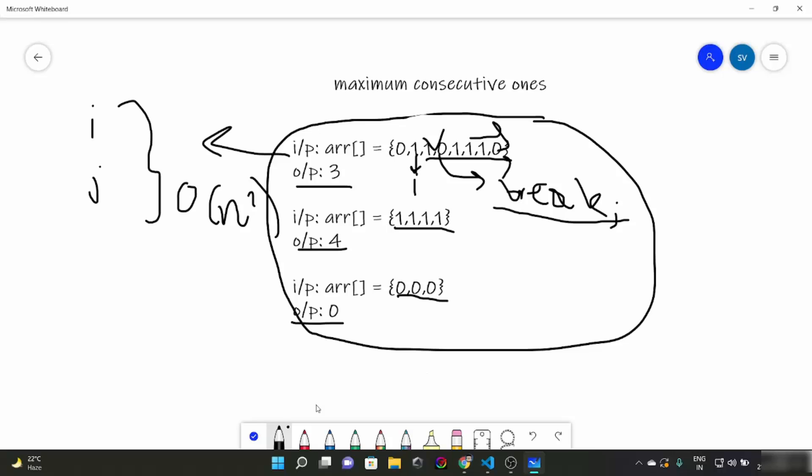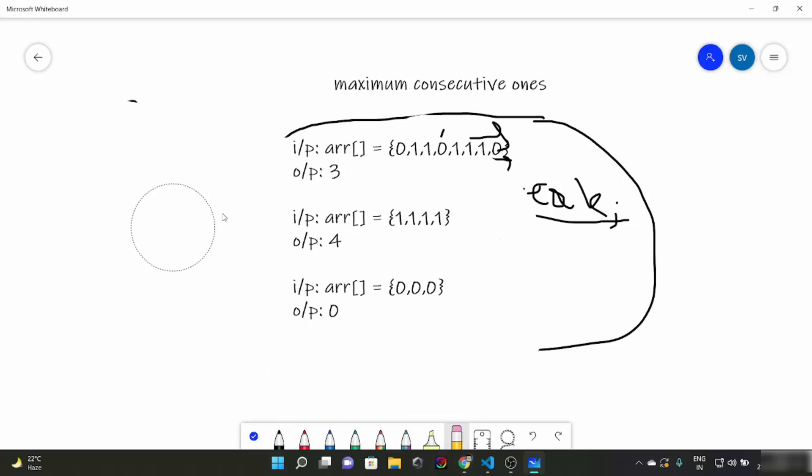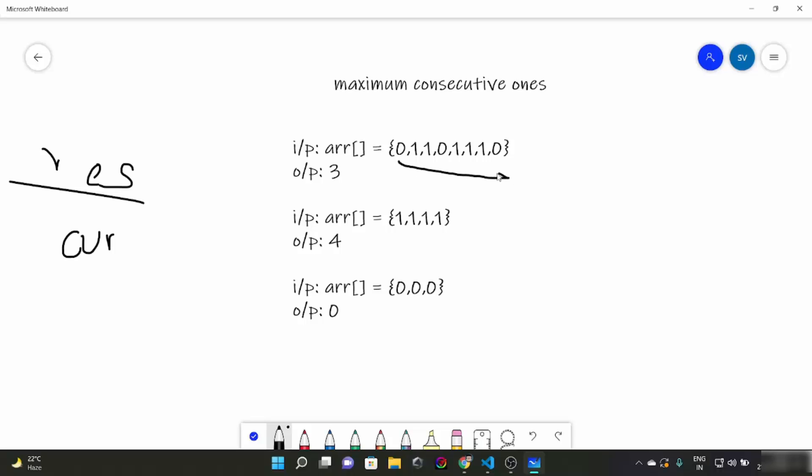So let's talk about the efficient approach. What we are going to do here is we are going to have two variables, one is res, one is curr. We are going to run a loop from first element till last element. And what we are going to do here is that if we find element as 0, we will put curr as 0. We will reset the value of curr. Initially curr is going to be 0, res is also going to be 0.